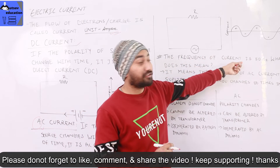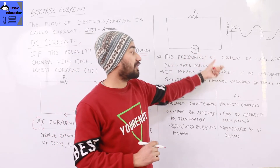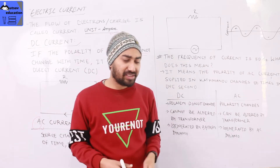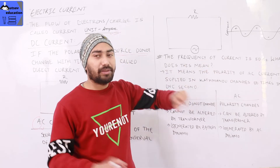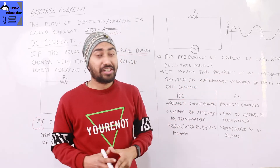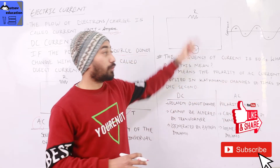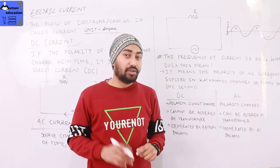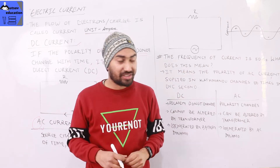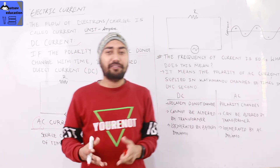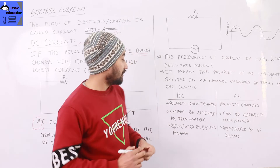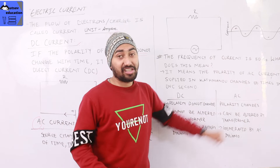Here is an important question: the frequency of AC current supplied in Kathmandu is 50 Hz. What does this mean? It means that the polarity of the AC current changes 50 times in 1 second — positive and negative change 50 times per second. So the difference between AC and DC current is that DC current polarity does not change, while AC current polarity changes with regular intervals of time.